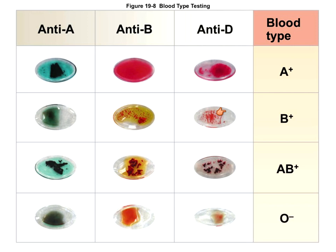For another patient, if we see clumping only in B and clumping in the RH well, that person would be B positive. If we see clumping in all three wells — A, B, and RH — then we have type AB positive. And if we look at the wells and there's no clumping in any of the three, then we have type O blood — type O negative in this case.